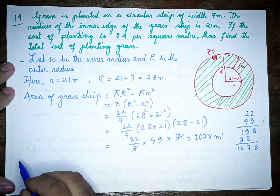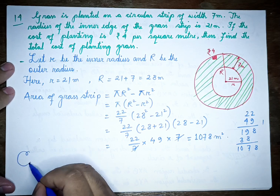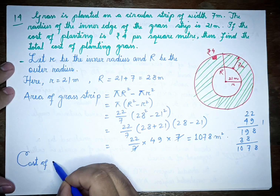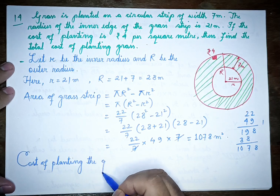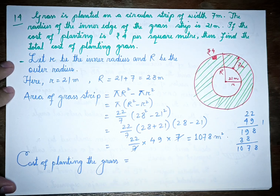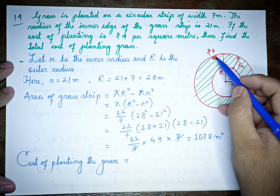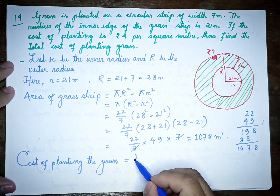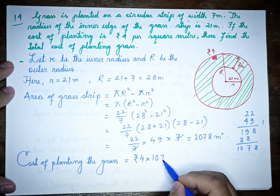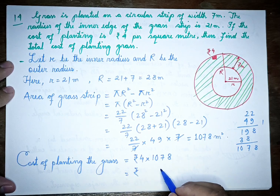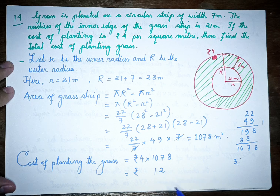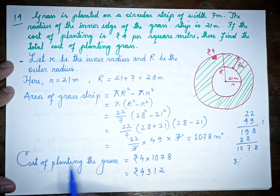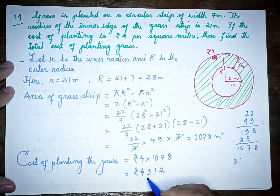The cost of planting is Rs. 4 per square meter and the total area is 1078 square meters. So the total cost of planting the grass is 1078 multiplied by 4, which equals Rs. 4312.